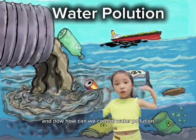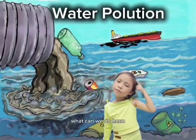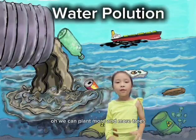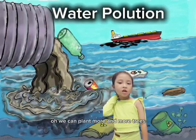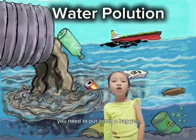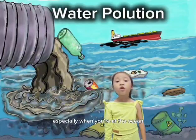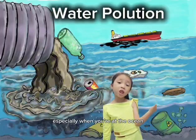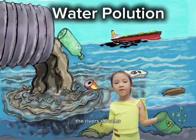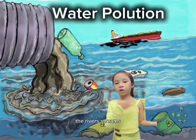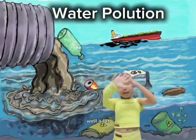How can we control water pollution? What can we do? We can plant more and more trees. You need to collect your trash and put it into a bag, especially when you're at the ocean, the lake, the rivers, streams.